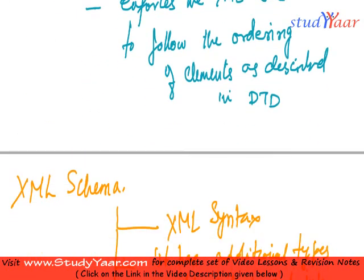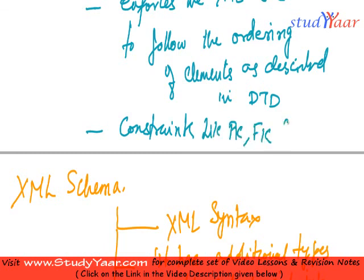Actually, you can write another limitation that constraints cannot be specified, constraints like primary key.